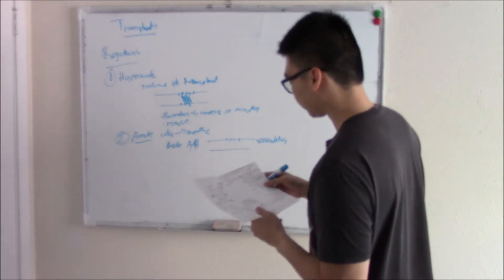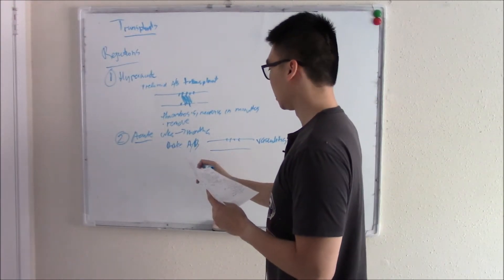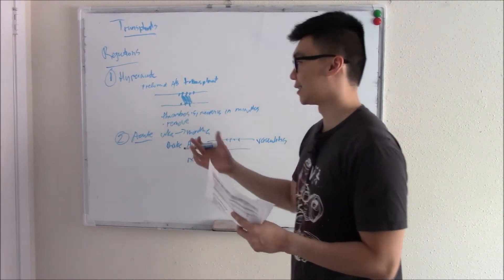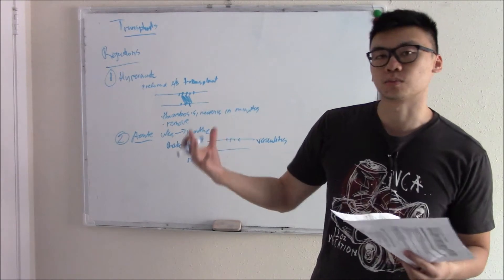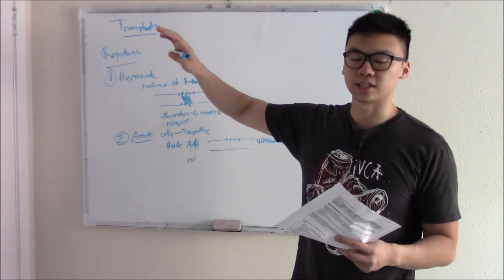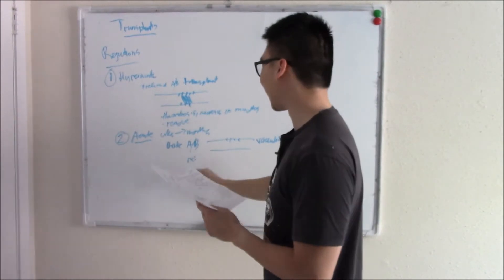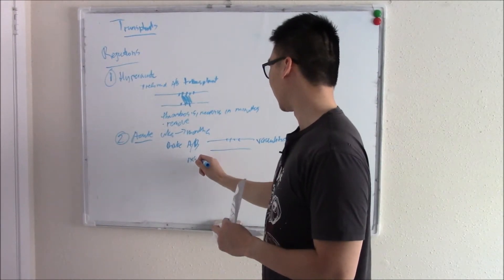You get inflammation of your vessels, but it's nowhere close to thrombosis and destruction. What do we do? We don't need to remove the whole thing, it's not dead yet. We can treat it with some immunosuppressants, some transplant medications that we'll talk about soon enough. Treatment with immunosuppressants.